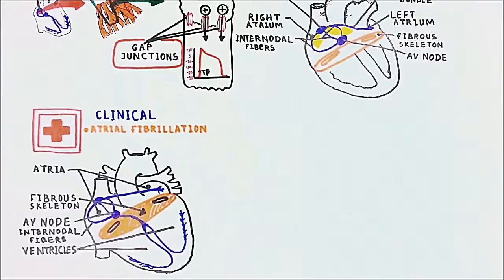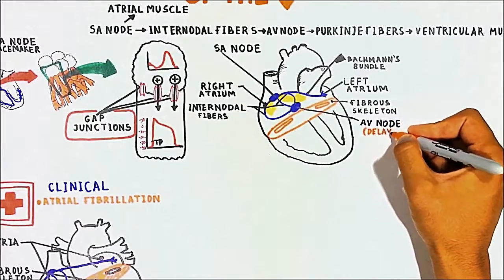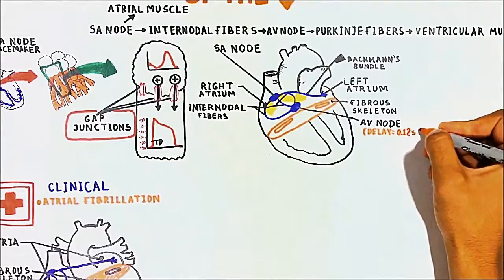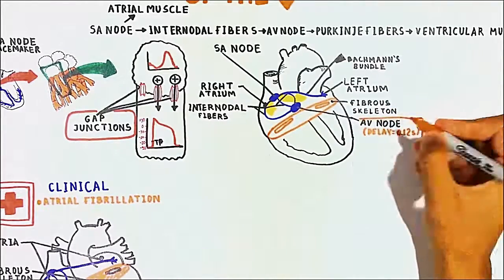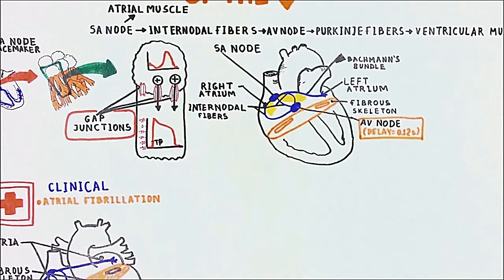The AV node delays impulses by approximately 0.12 seconds because it is specialized for slow conduction. This delay in the cardiac pulse is extremely important — it allows the atria to completely empty their blood into the ventricles first, before the ventricles contract. Simultaneous contraction would cause inefficient filling and backflow.